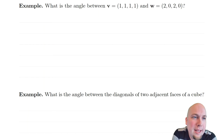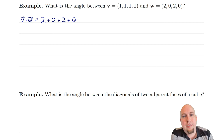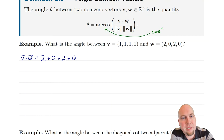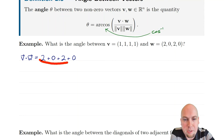Let's go through an example. How do we compute the angle between two vectors? Let's start with two vectors in four dimensions: v equals (1, 1, 1, 1) and w equals (2, 0, 2, 0). To compute the angle, we need the dot product of those two vectors and their lengths. The dot product is just multiply entry-wise and add up: two plus zero plus two plus zero, which is four.